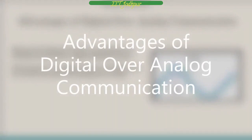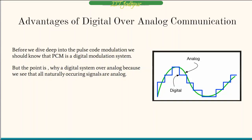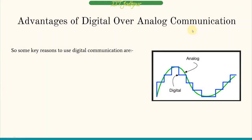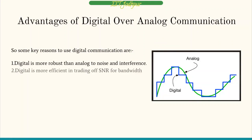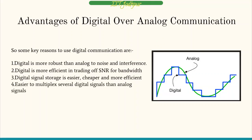Before we dive deep into Pulse Code Modulation, we should know that it is a digital modulation system. Why use a digital communication system over an analog? All naturally occurring signals are analog, but key reasons to use digital are: digital is much more robust against noise and interference, more efficient for bandwidth, easier to store, and cheaper and easier to multiplex several digital signals than analog signals.